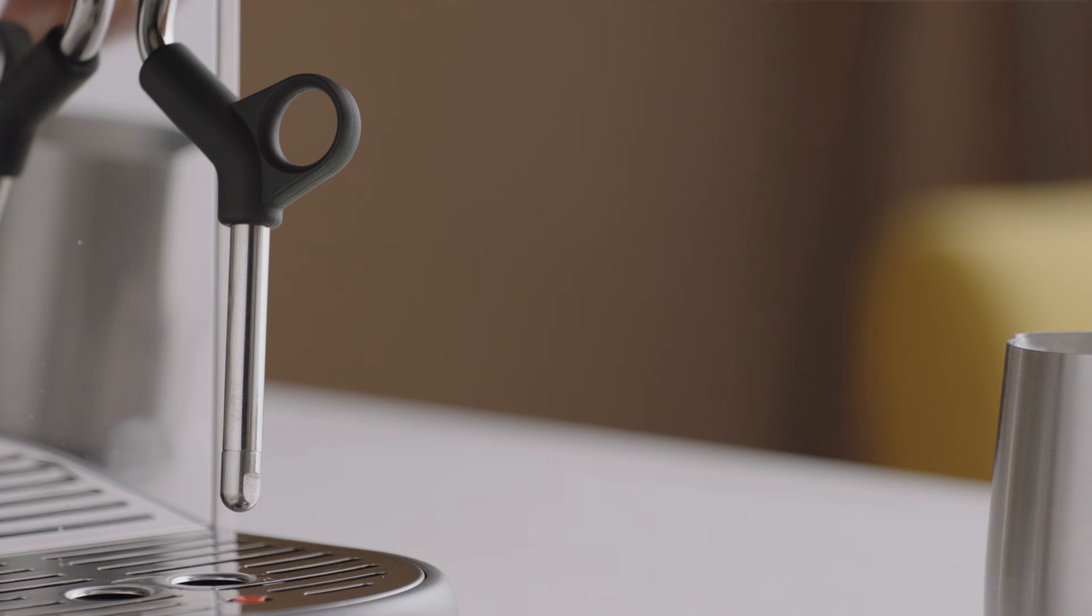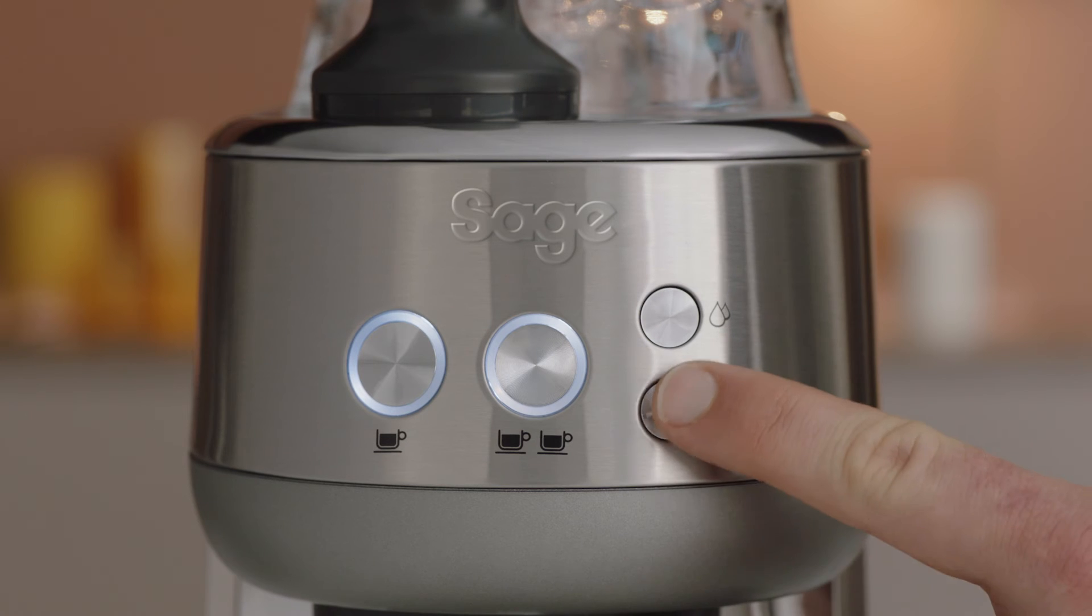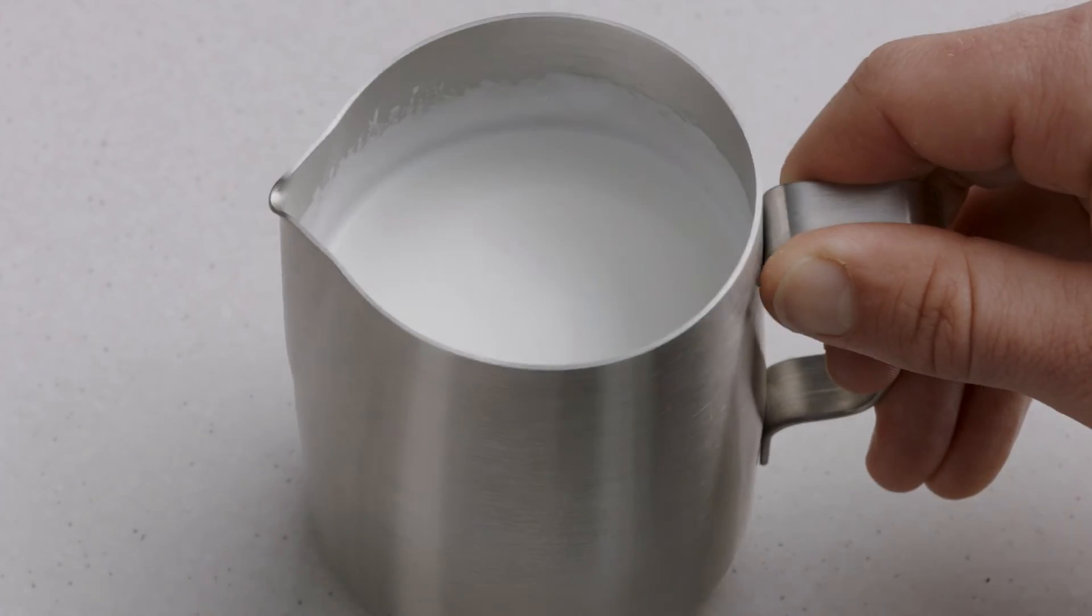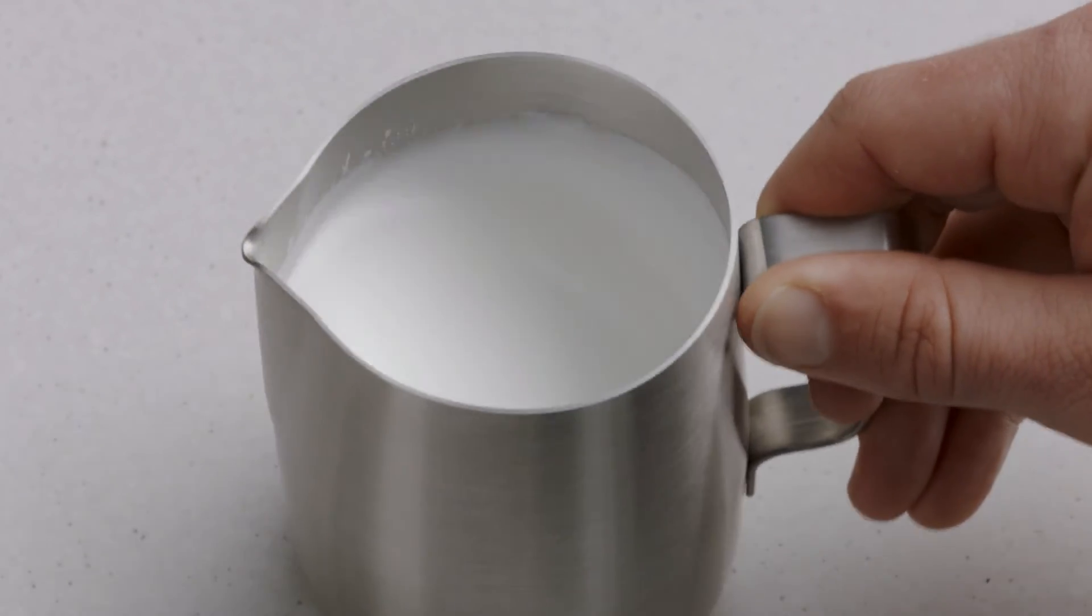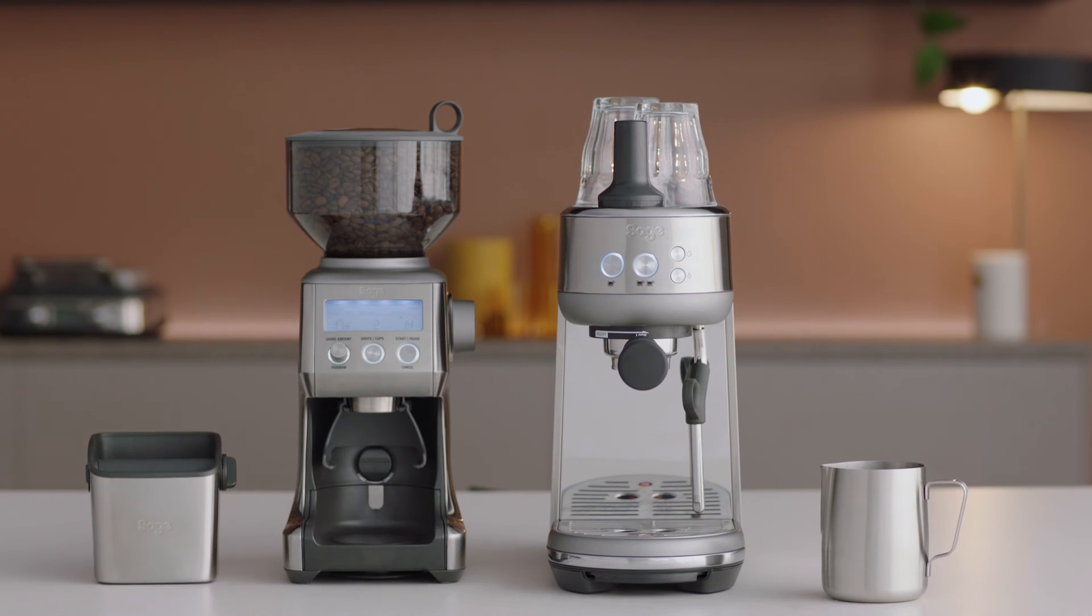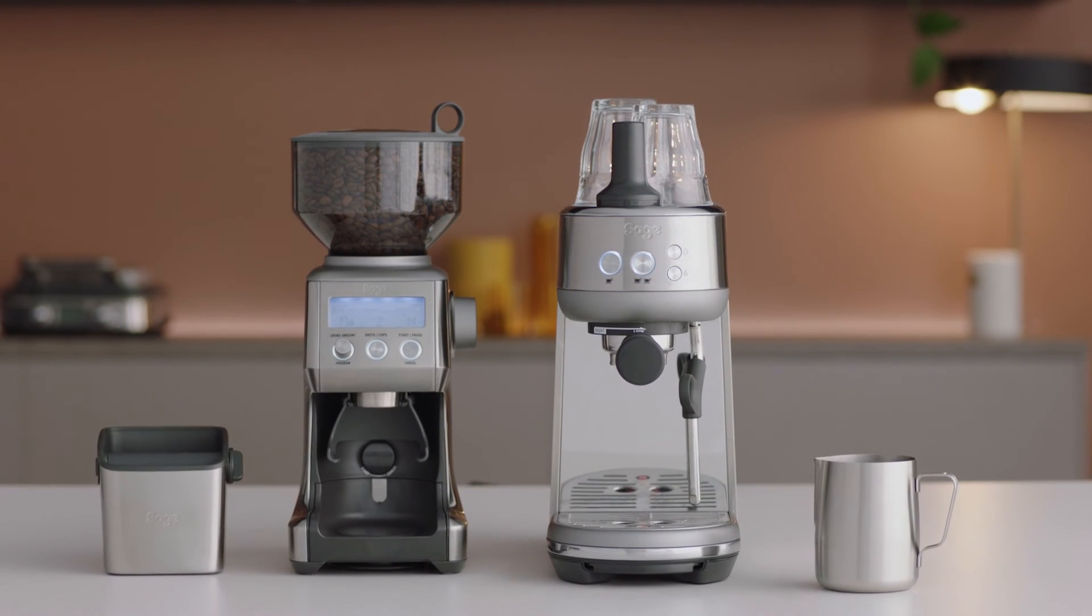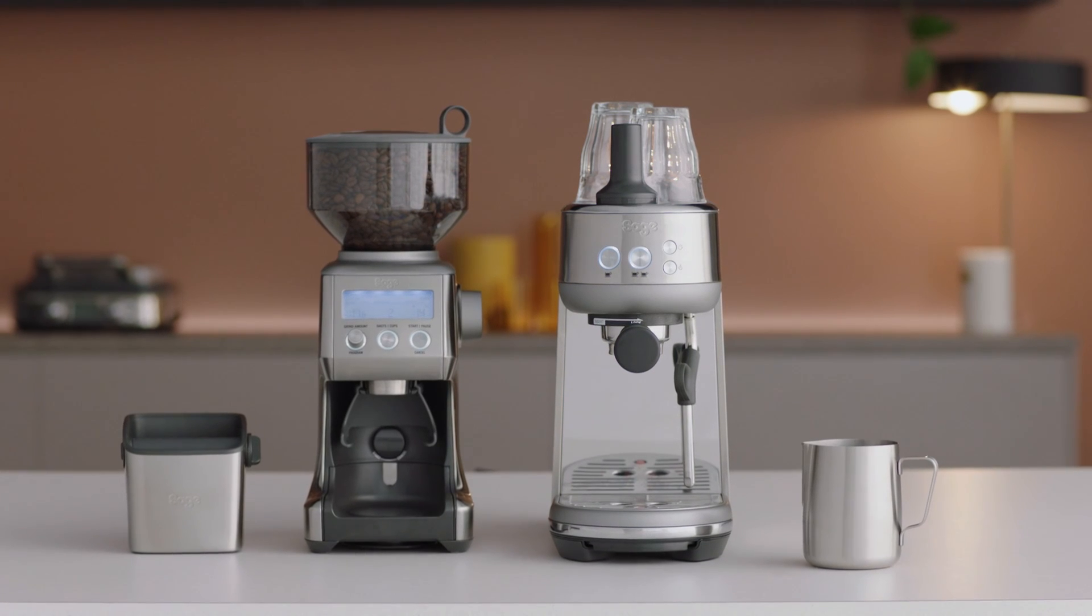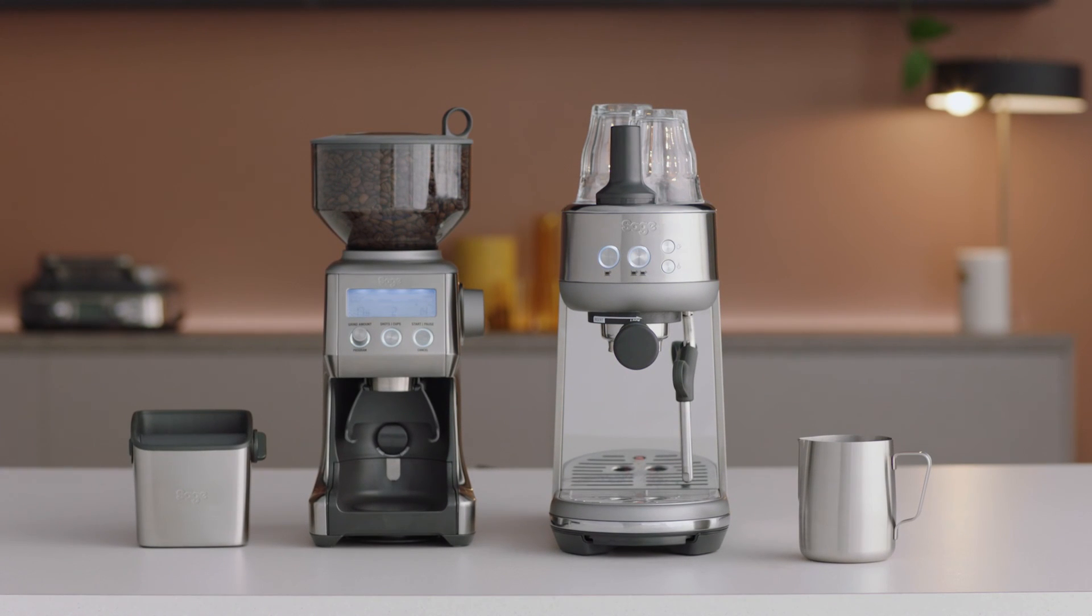Press the steam button to purge out any residual milk. Tap the jug on the bench to collapse any bubbles. Now you are ready to create latte art. Remember, different brands and types of milks and milk alternatives will texture differently, so you may need to adjust your texture levels accordingly.